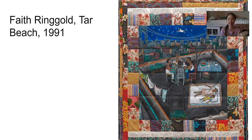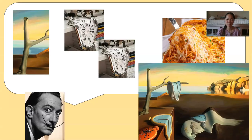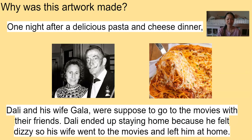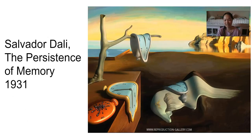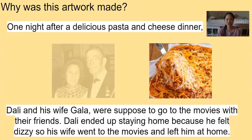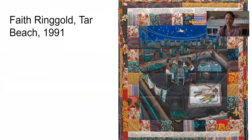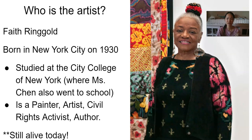The second painting we're going to be talking about is 'Tar Beach,' made by Faith Ringgold in 1991. Just like Dalí's surrealist painting — where everything was made up in his head — 'Tar Beach' by Faith Ringgold also has elements that are both real and imagined.